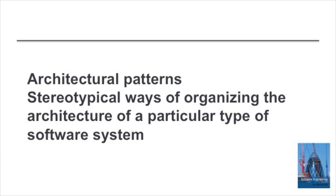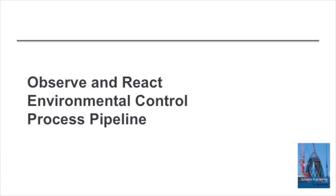I'm Ian Somerville and I'm going to continue my videos on real-time systems by talking about architectural patterns — ways in which the architectures of real-time systems may be organised. Each type of system tends to have one of a number of architectural patterns, and this is true for real-time systems. In this video I'm going to talk about three of these patterns: Observe and React, Environmental Control, and Process Pipeline.